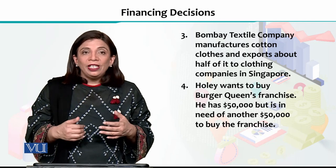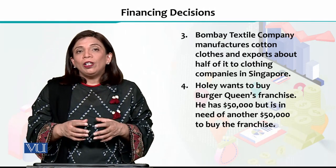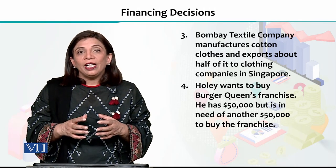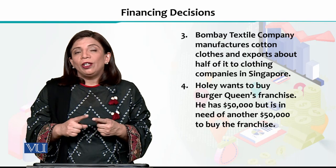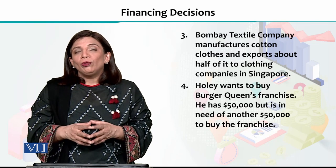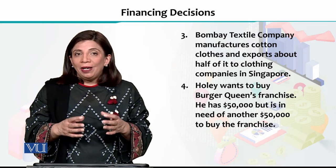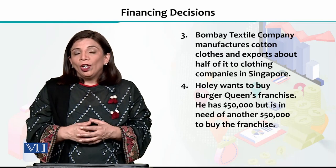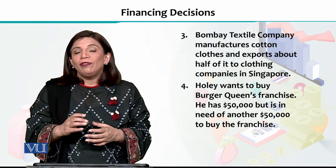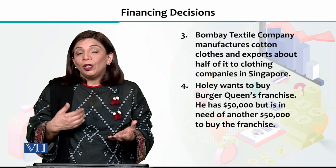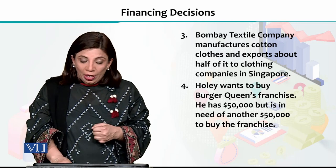The fourth situation involves a person whose name is Holly, and he wants to buy a franchise — specifically a Burger Queen franchise. For one Burger Queen franchise, at minimum one hundred thousand dollars is required. He currently has fifty thousand dollars in cash, and he needs an additional fifty thousand dollars. An important point here is that he currently has no existing business. So which method of financing will be most appropriate for him in this situation? We will discuss this now.